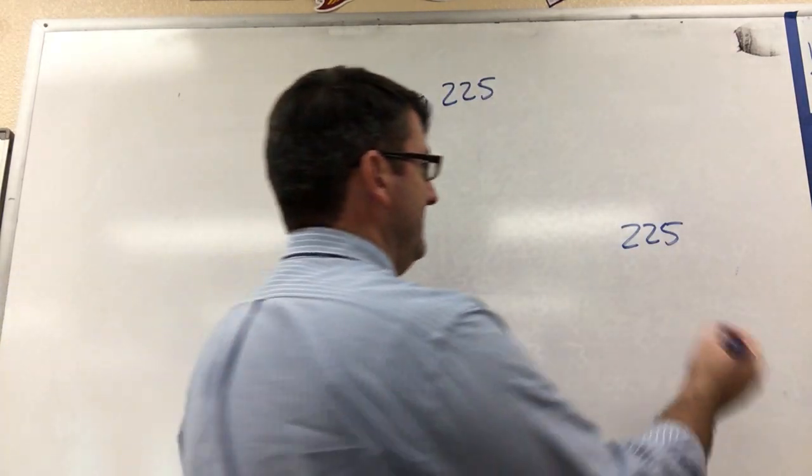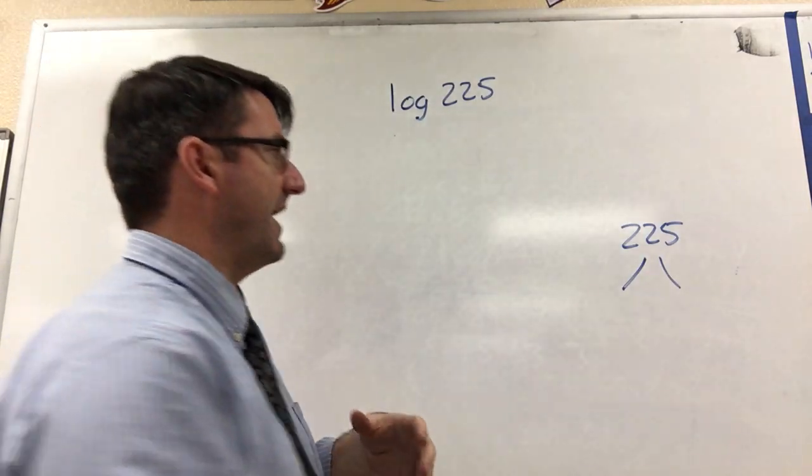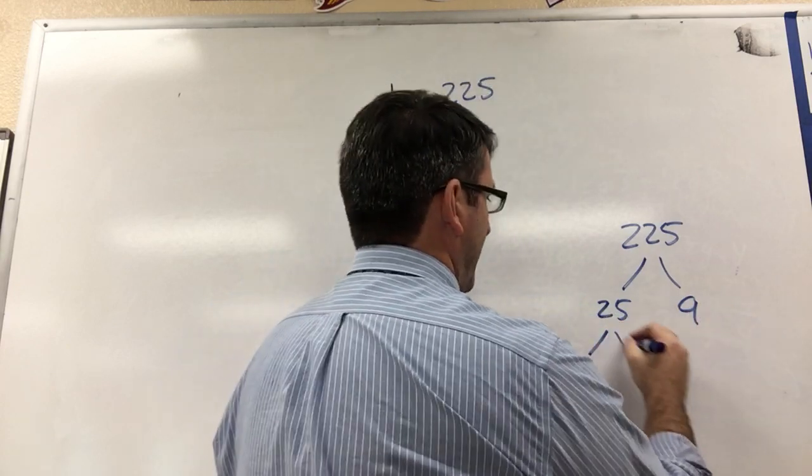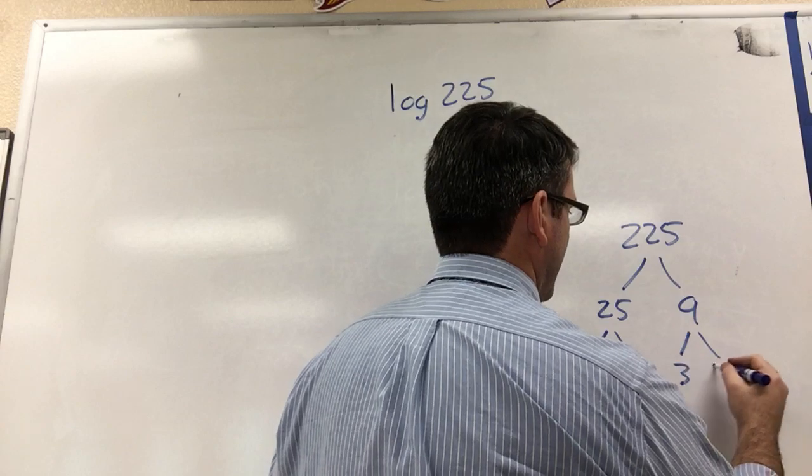in this case 225, and use a factor tree to break it down into its prime factors. So 225 is 25 times 9, 25 is 5 times 5, and 9 is 3 times 3.